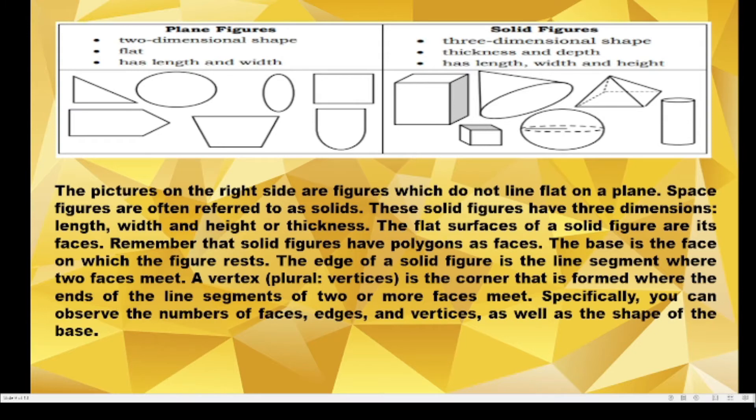The flat surfaces of a solid figure are its faces. Remember that solid figures have polygons as faces. The base is the face on which the figure rests. The edge of a solid figure is the line segment where two faces meet. A vertex, plural vertices, is the corner that is formed where the end of the line segments of two or more faces meet.